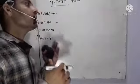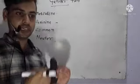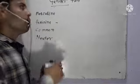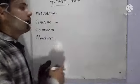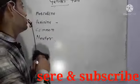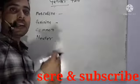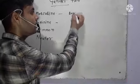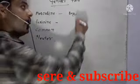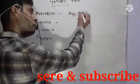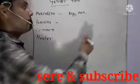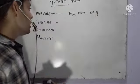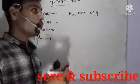We need to know the differences in any article. We have mentioned four types of gender. First, we will discuss masculine gender. Basically, it denotes the male gender. For example, boy equals man. We can also mention the man as a king. The masculine gender is used to denote the male gender.